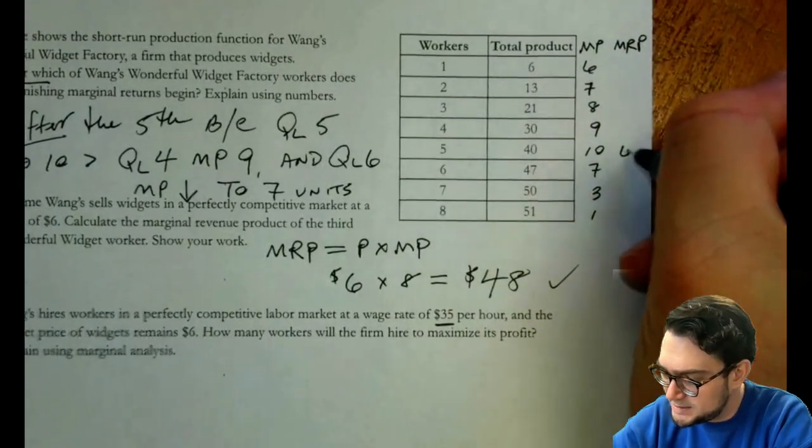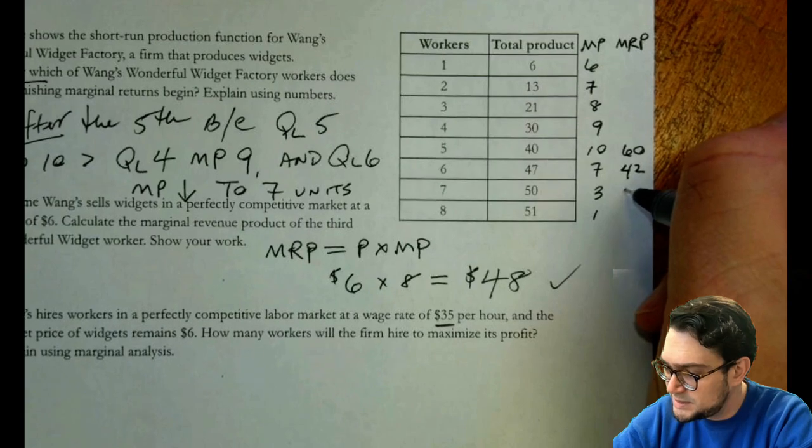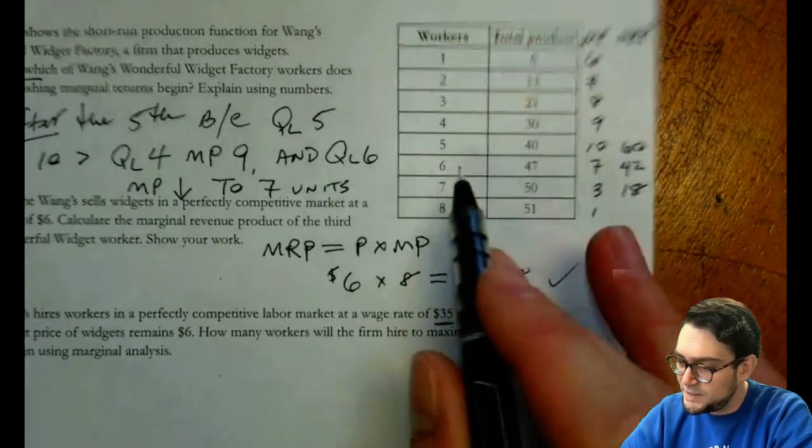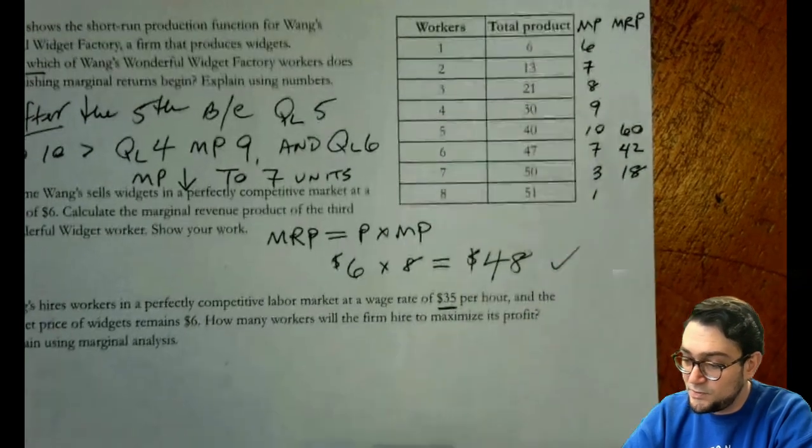Ten times six is 60, seven times six is 42, three times six is 18. So they're definitely going to hire the sixth worker.